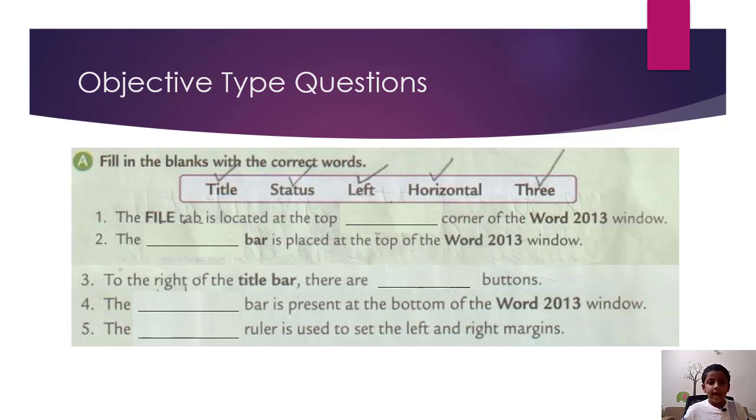First, the file tab is located at the top left corner of the Word 2013 window. So the answer is left.